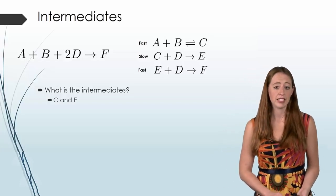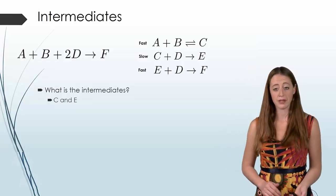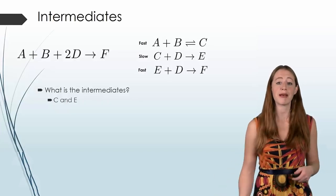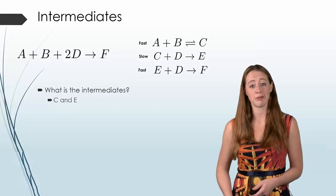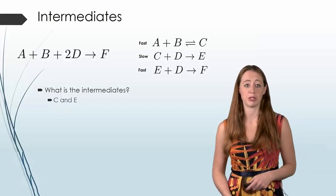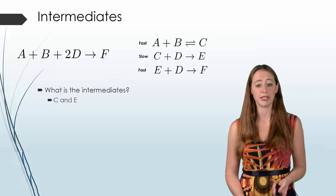In this case, it's both C and E. Because in our first step we make C, and then we use it back up in our second step. And then in our second step we make E, and we use it back up in our third step. So they're both intermediates, and that's fine, you can have multiple intermediates.